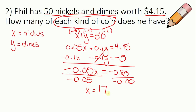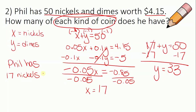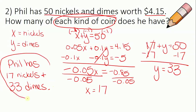After multiplying, I get negative 0.1X minus 0.1Y equals negative 5. Adding the equations, 0.05X minus 0.1X gives negative 0.05X, and 4.15 minus 5 gives negative 0.85. Dividing by negative 0.05 gives X equals 17. Plugging back in, 17 plus Y equals 50, so Y equals 33. Final answer: Phil has 17 nickels and 33 dimes.